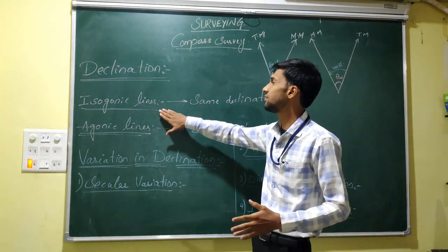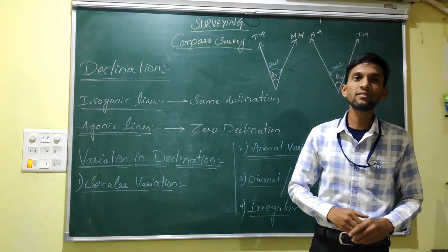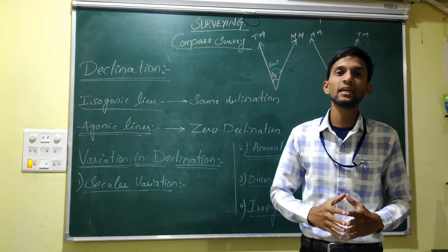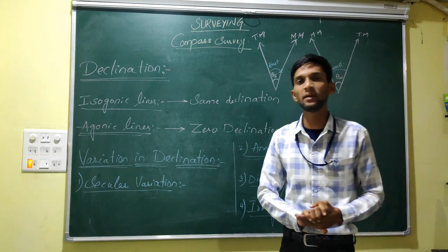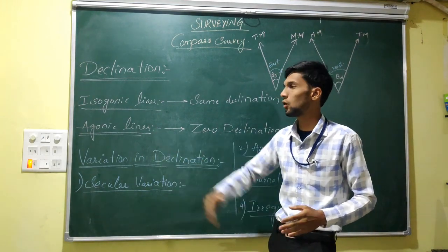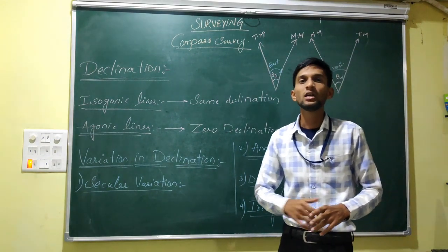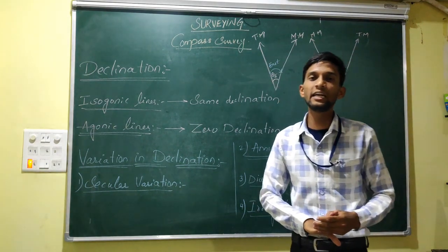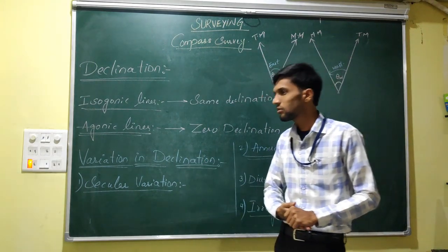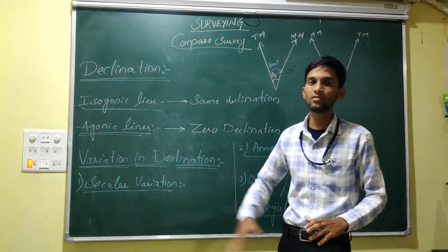What are isogonic lines? The lines drawn through points at which the same declination is present are called isogonic lines. And what are agonic lines? The lines drawn through points where the declination is 0 are called agonic lines.